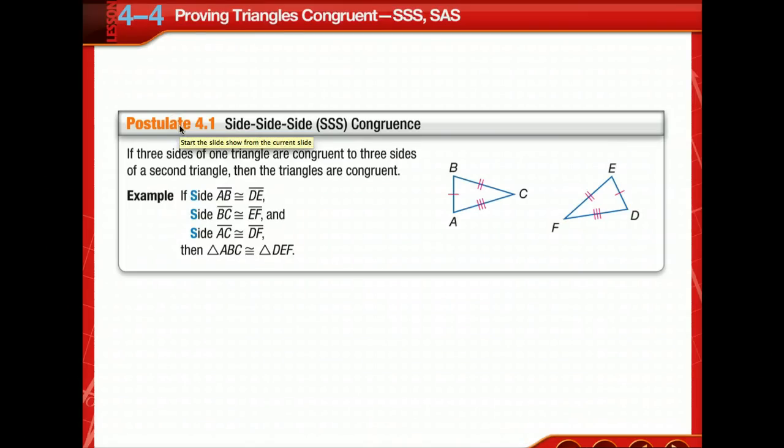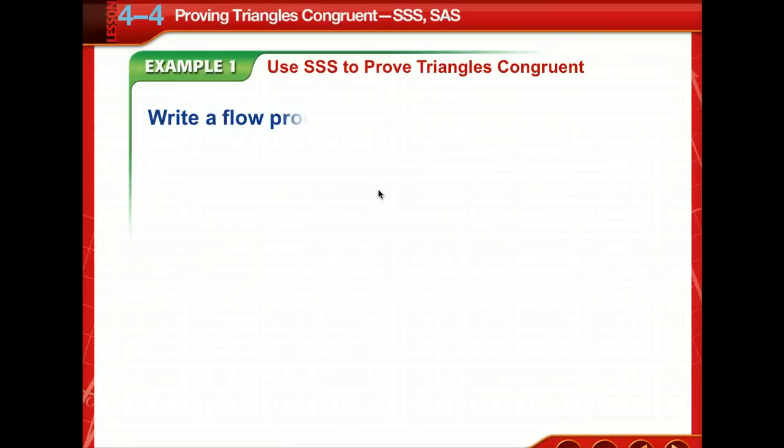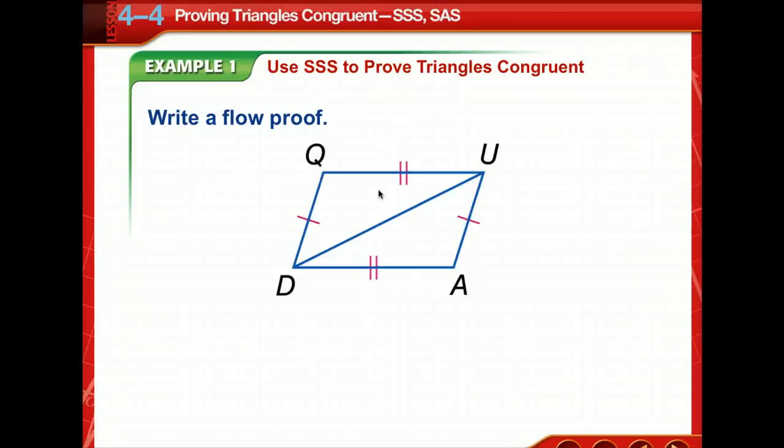First of all, let's talk about the side-side-side congruence. If three sides of one triangle are congruent to three sides of another triangle, then these triangles are congruent. So last lesson, we proved two triangles congruent by showing that all six pairs, all the sides and all the angles, that all the corresponding parts were congruent. It is possible to prove two triangles congruent using fewer pairs. If two triangles have the same three side lengths, then they are congruent.